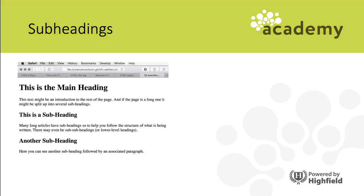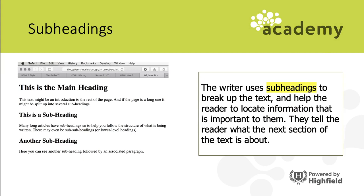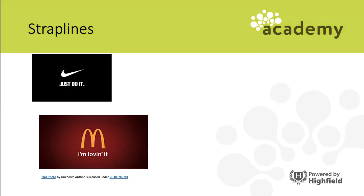Subheadings help break down a document into much smaller chunks. They tell the reader what the next section of the text is about and help the reader locate information within the text. For example, if you have a document about food safety and you want to find information specifically about food poisoning, you might skim and scan the text looking for 'food poisoning' as a subheading to find that relevant section.